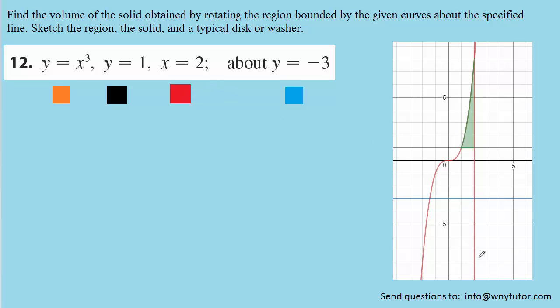And then x equals 2 is colored in red, which is a vertical line that passes through x equals 2. And what happens is those three curves create this green shaded region right here. We've also included the axis about which we are going to revolve that shaded region, y equals negative 3.